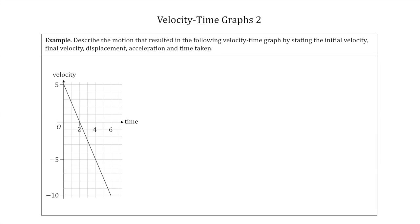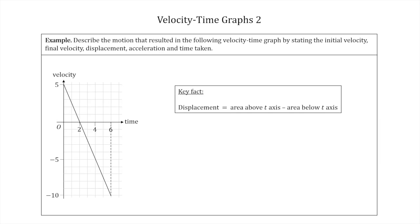We'll start by drawing a dotted line so we can see exactly where the graph ends at six seconds — we'll need this later. The key fact is: displacement equals area above the t-axis minus area below the t-axis. We're going to need this to find displacement. This is slightly different to the key fact in the previous video, where we said the area underneath the curve was the distance traveled.